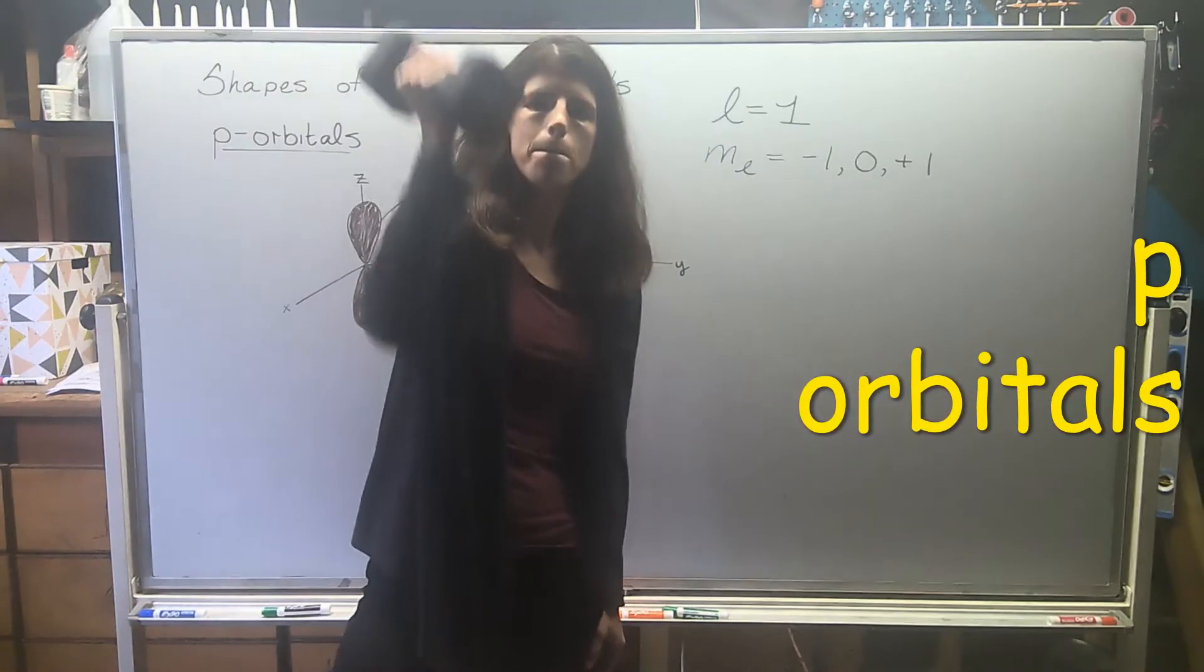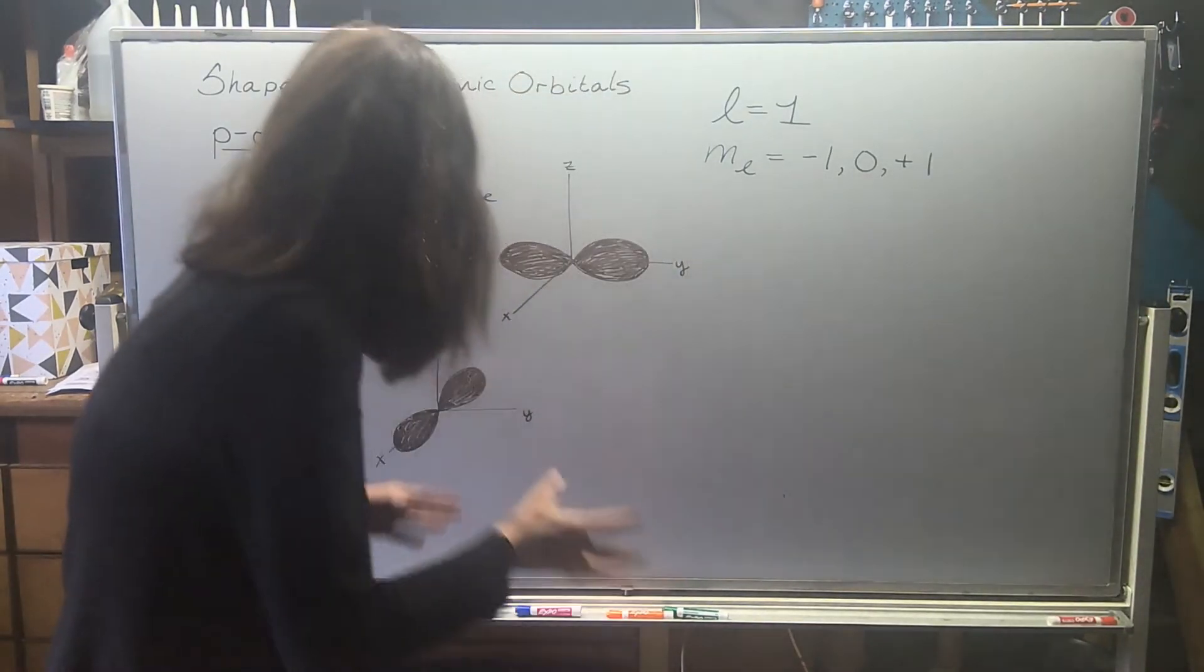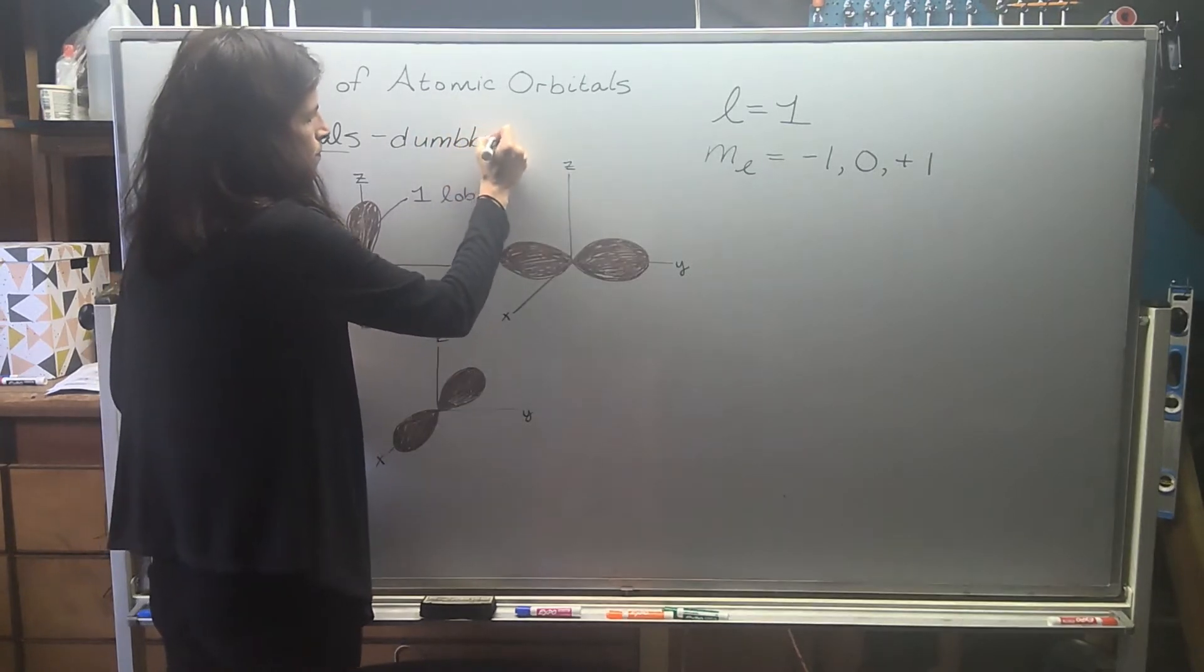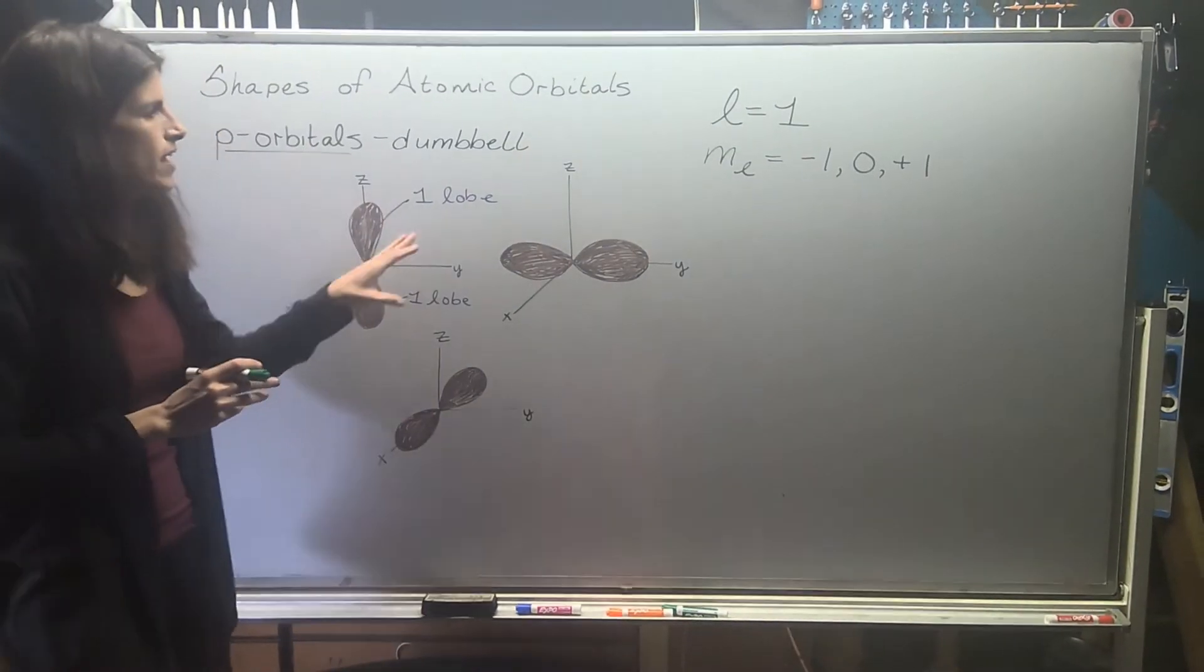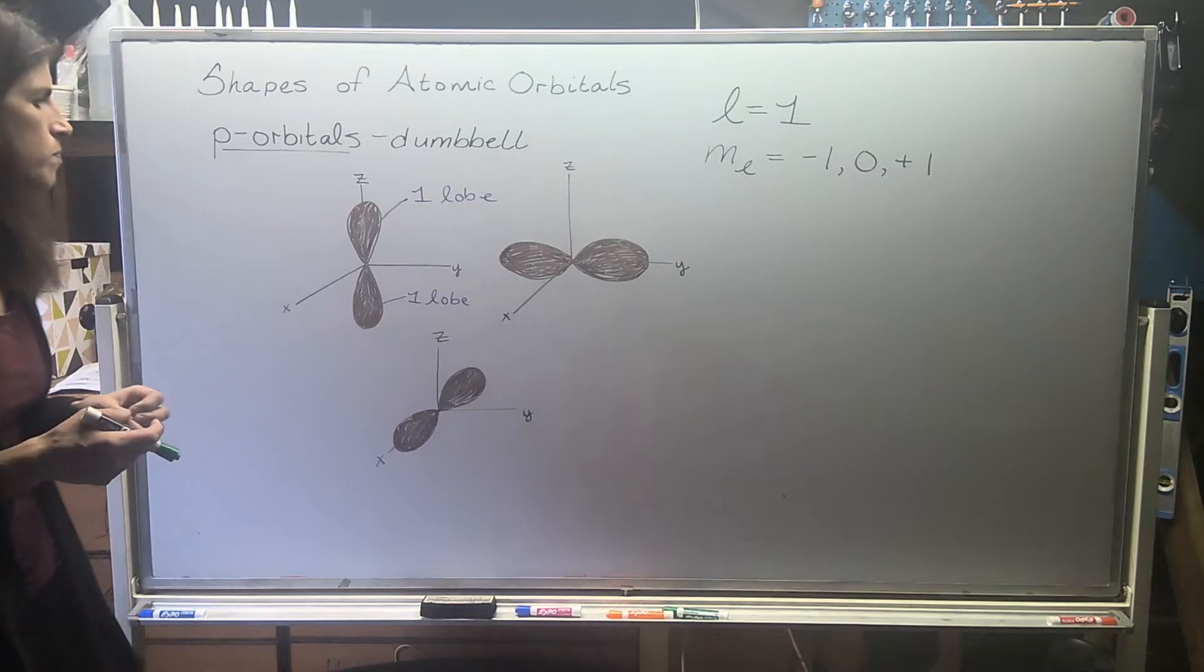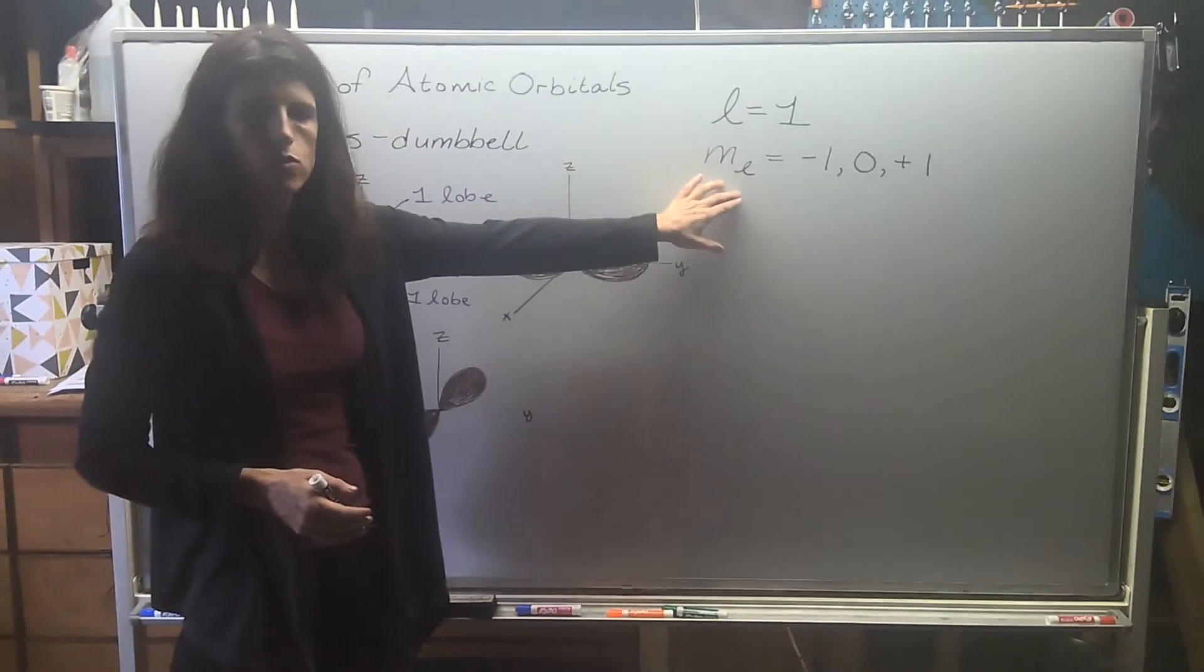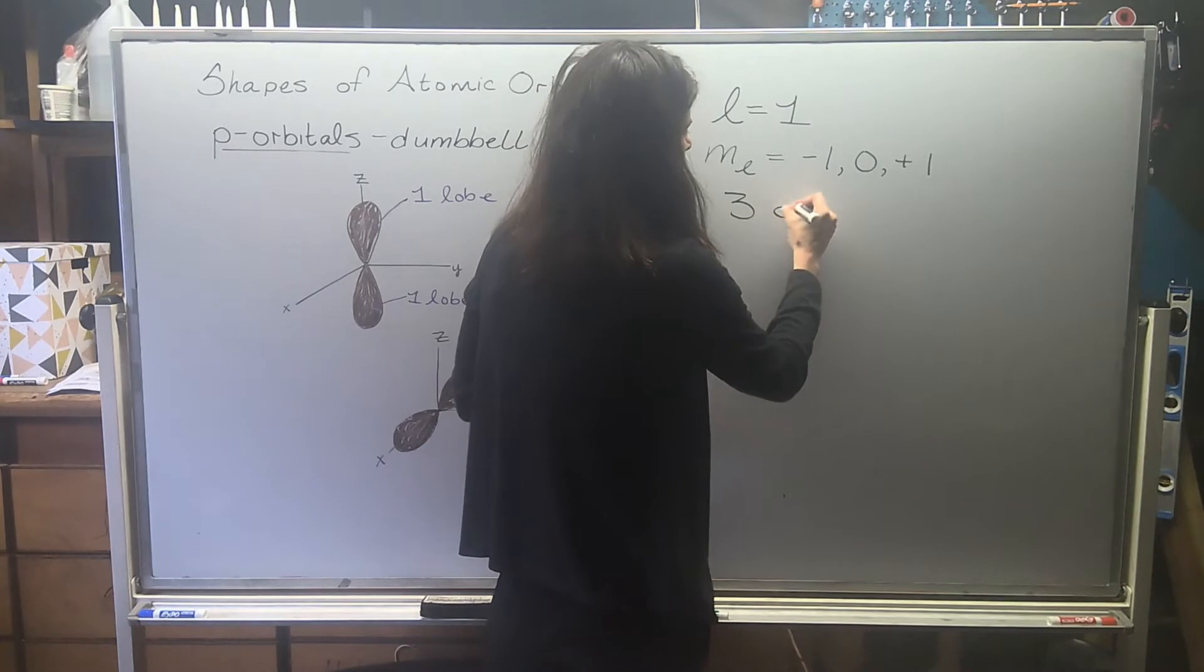Our p orbitals are described as being dumbbell shaped. And that's a legitimate term. You'll find it in a lot of textbooks and some of the literature. That's because they have 2 lobes. A lobe is an area of high probability of locating one of those electrons. What you see here is 3 different orientations. We'll talk about the ml values. There's 3 of them for p orbitals. That means that there's 3 distinct orientations.